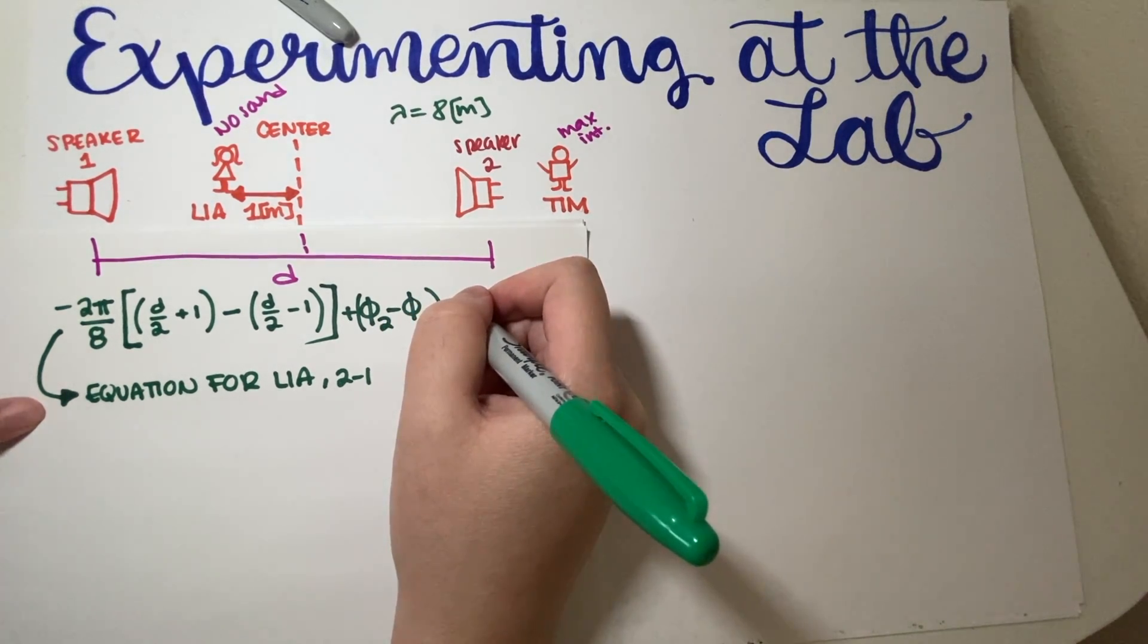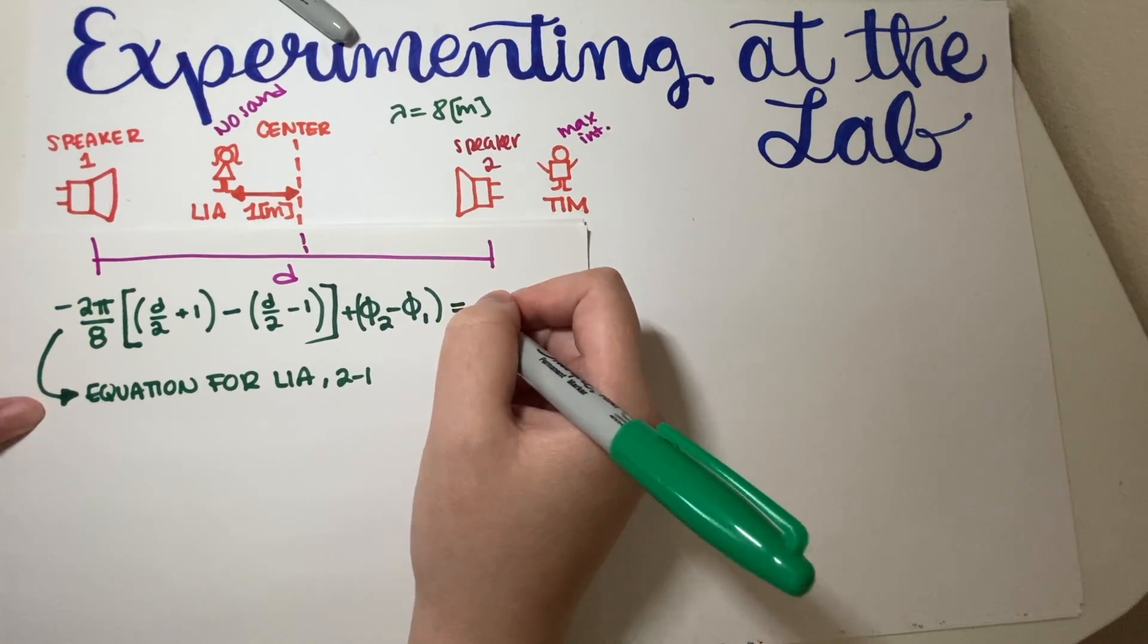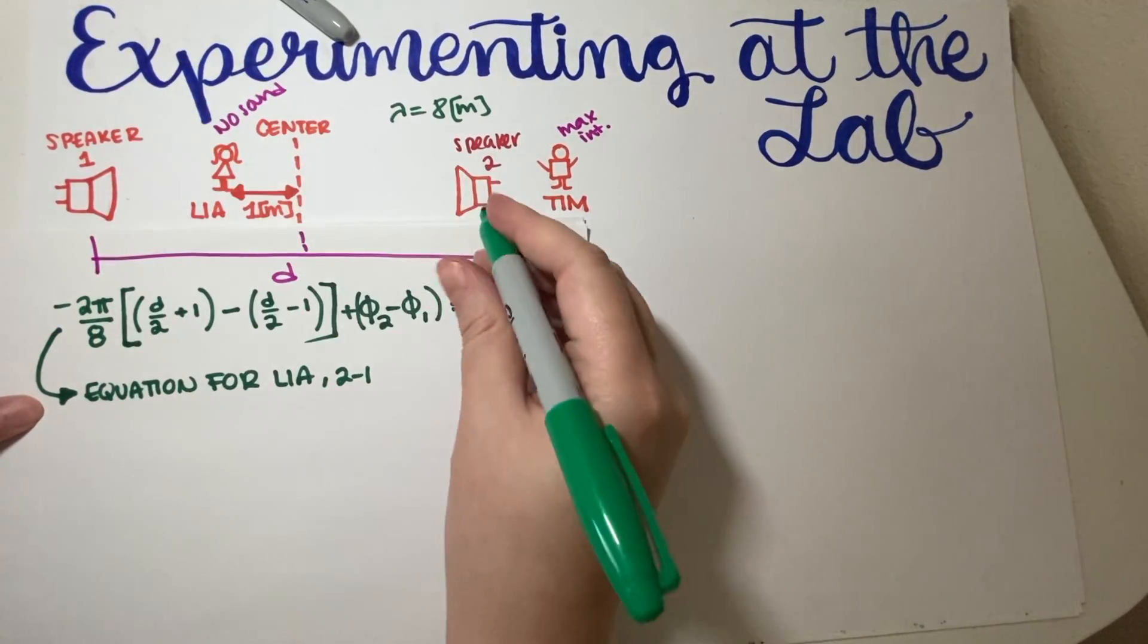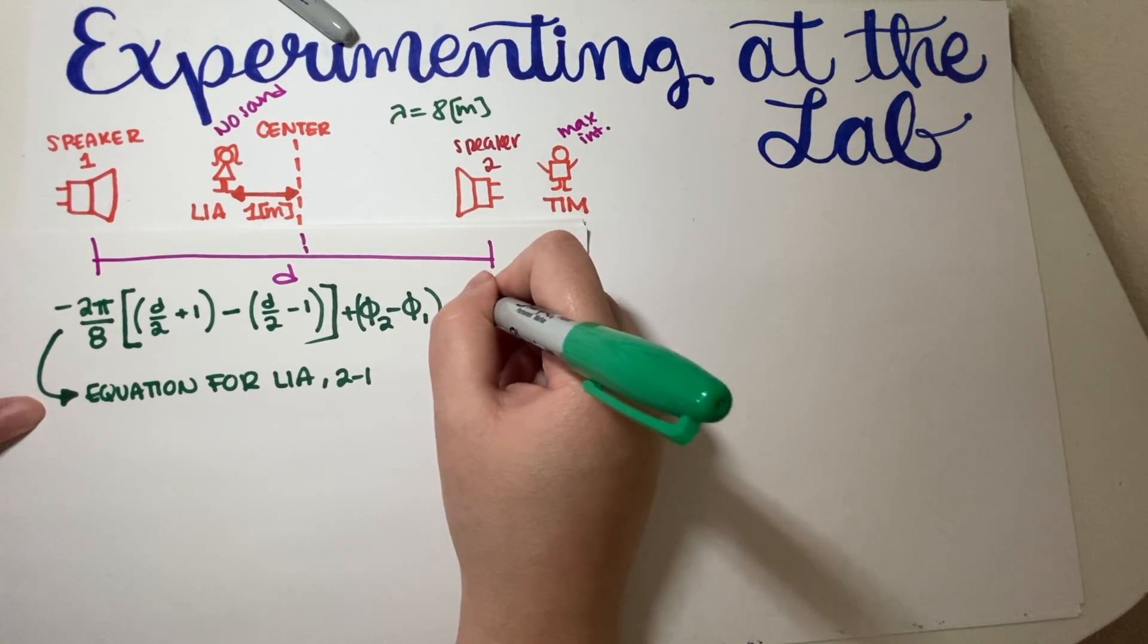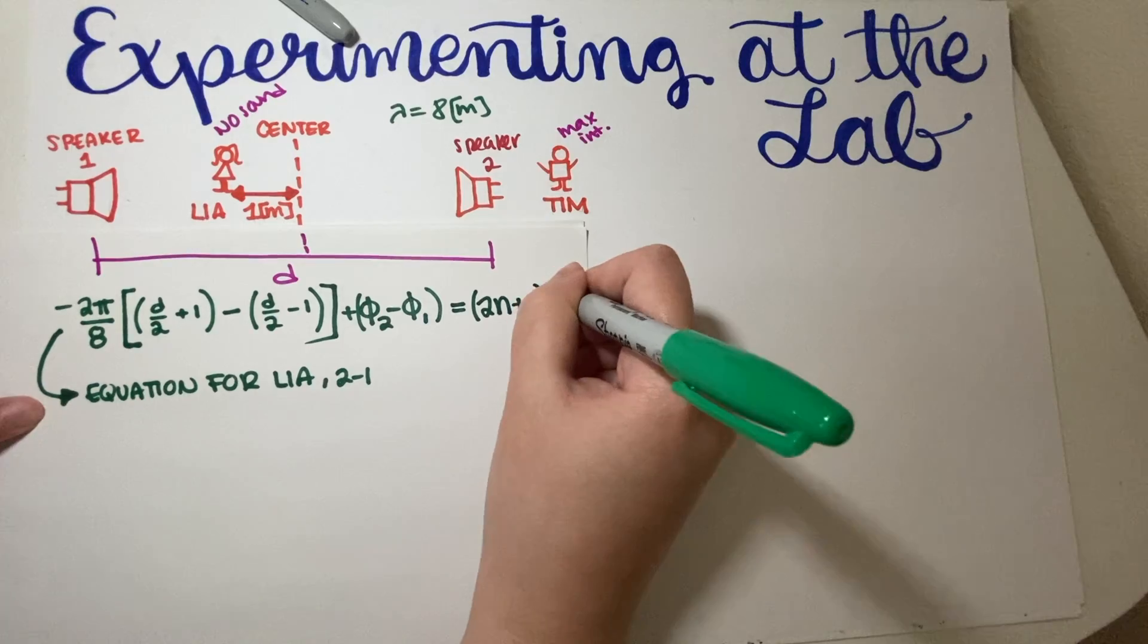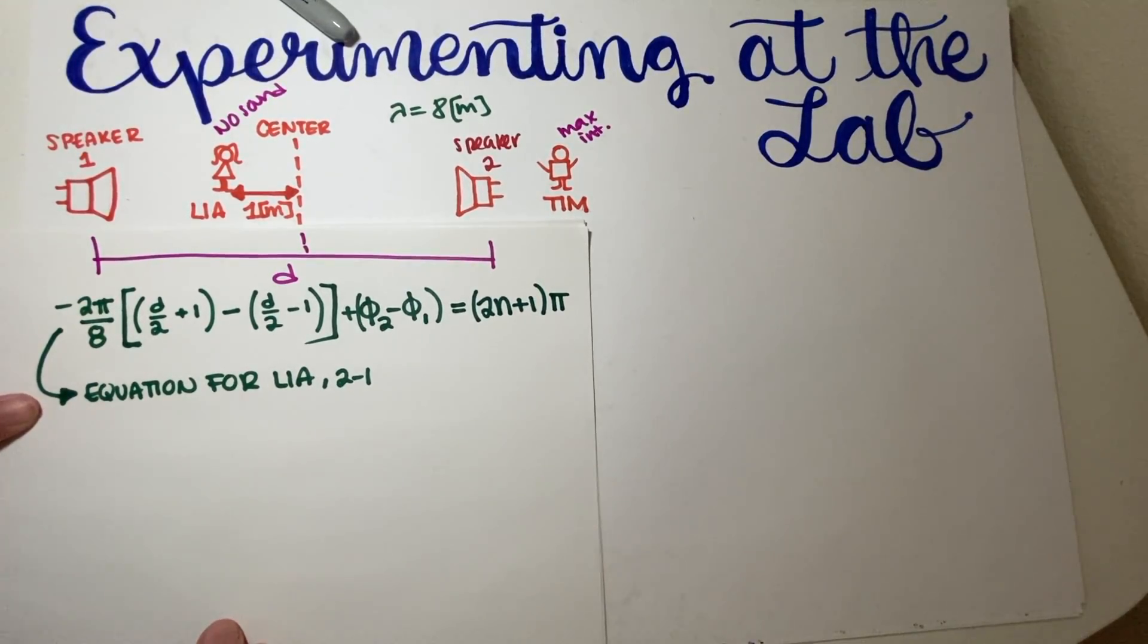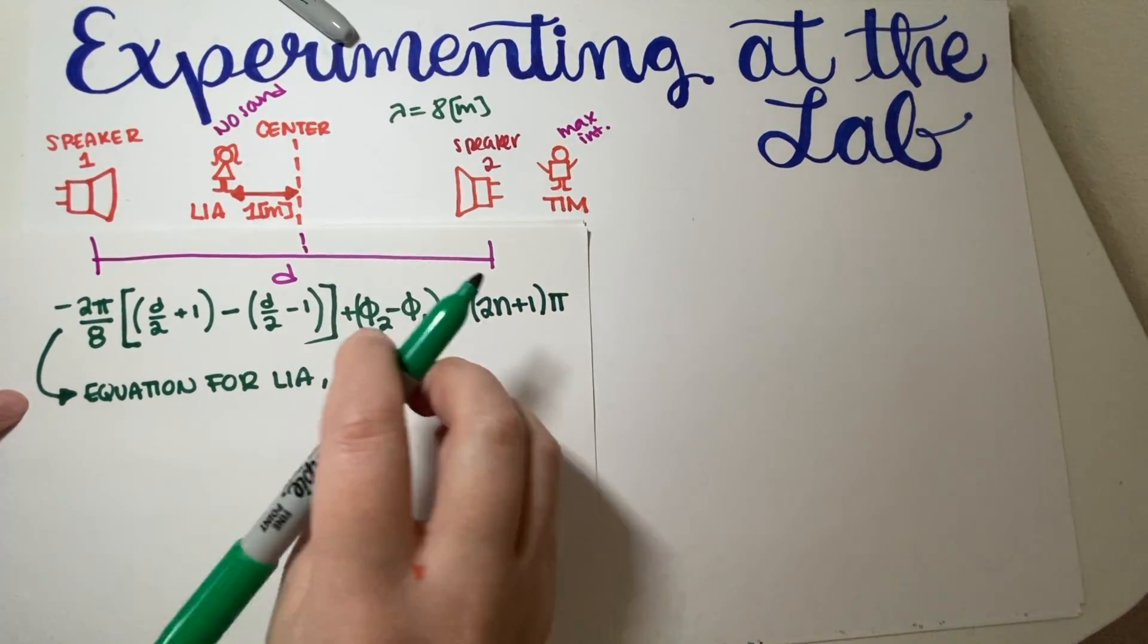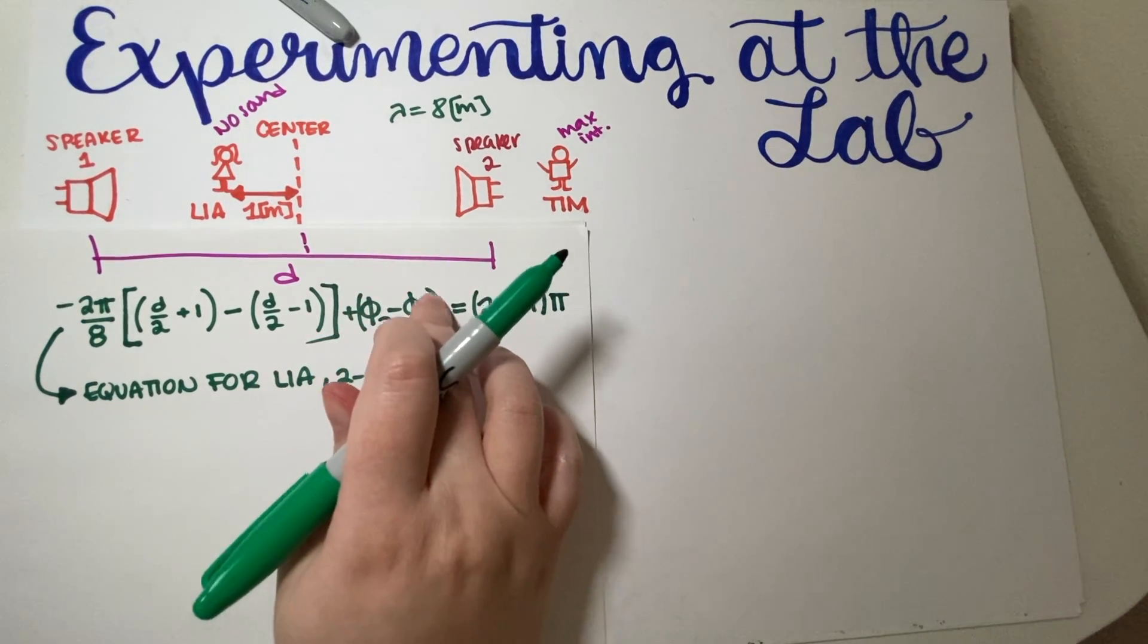And then I'm gonna go ahead and write, she hears no sound. So this is (2N+1)π. Okay. So this is Leah's equation. And what we want to find is basically this term over here.